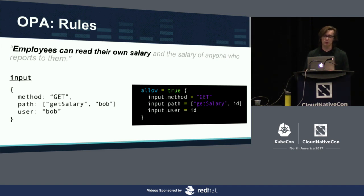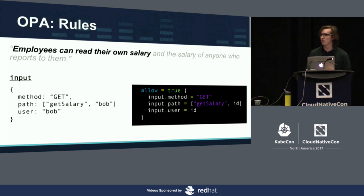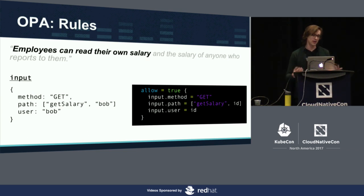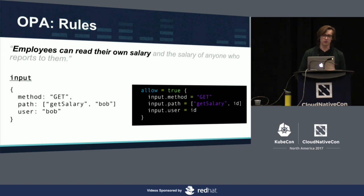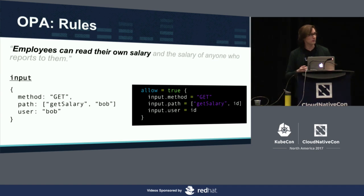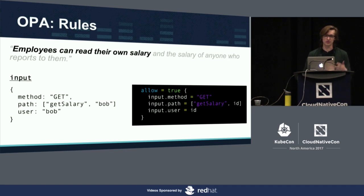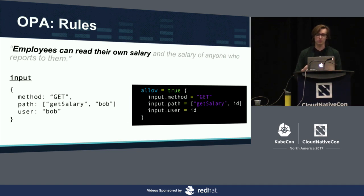What we're going to do is step through the example Manish set up and show how you would use OPA to enforce it. The policy in English is fairly simple: employees are allowed to read their own salary, and they can also read the salary of anybody who reports to them. When using OPA to enforce policy, you write rules that make decisions over some data. We create a rule called allow that allows requests if the employee is trying to read their own salary. The service provides input — the method, the path, and the authenticated user making the request. You can read the rule as: allow is true if input.method matches GET and input.path matches /get-salary/{id} and input.user matches id.